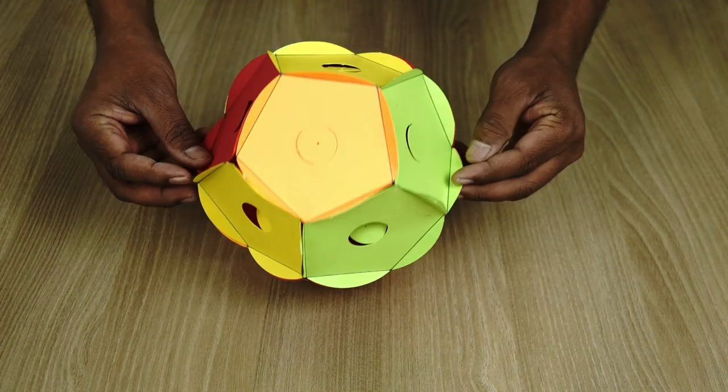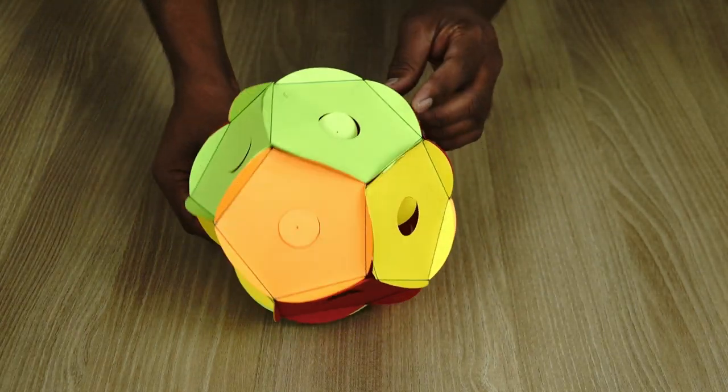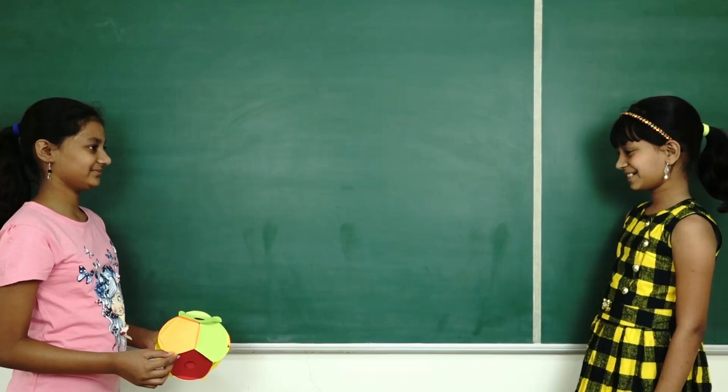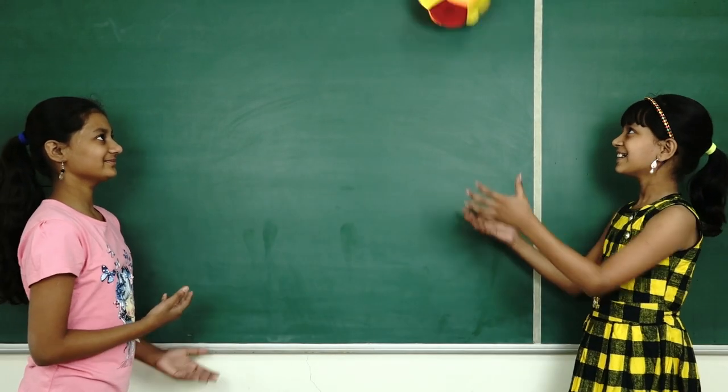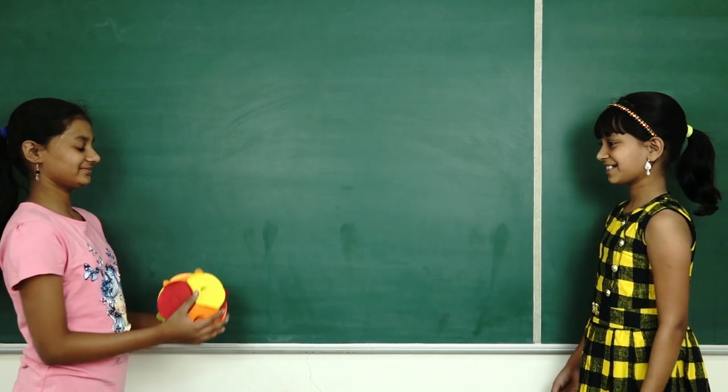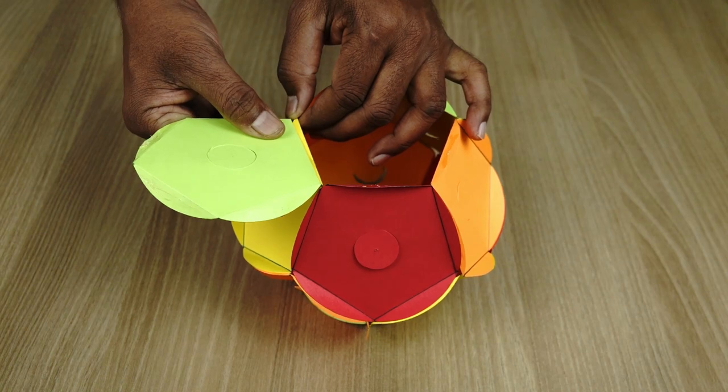So herein we have added the 12th side as well and see how beautiful the dodecahedron looks. And this is the ball of a dodecahedron and you can use it to toss it around with your friends, with your siblings at home or even outside if it turns out to be sturdy.